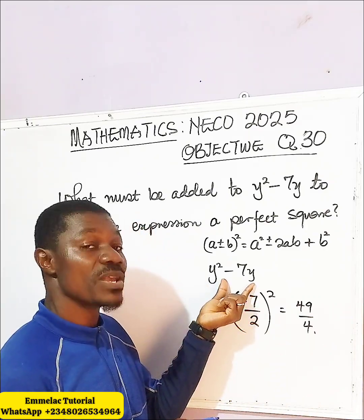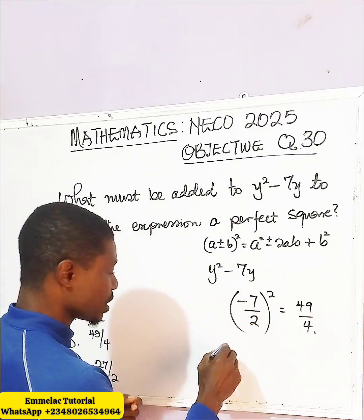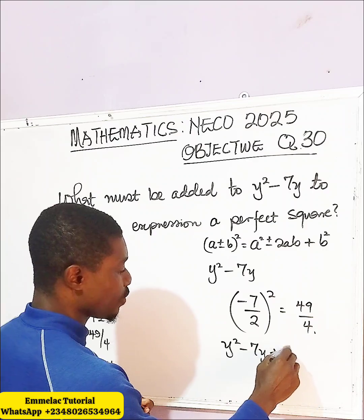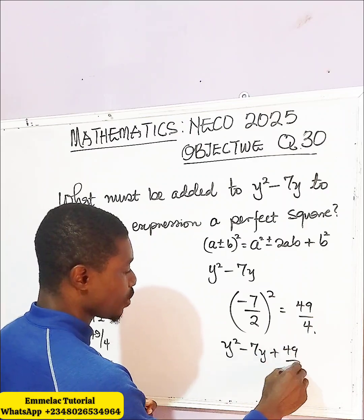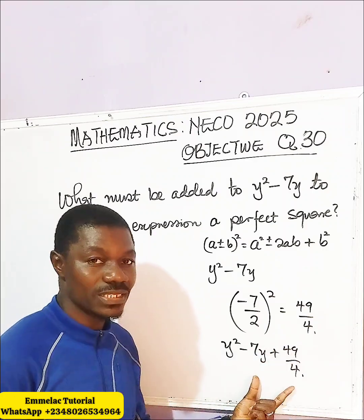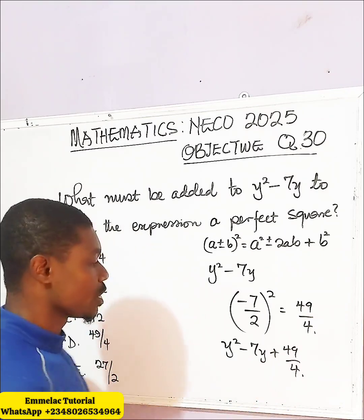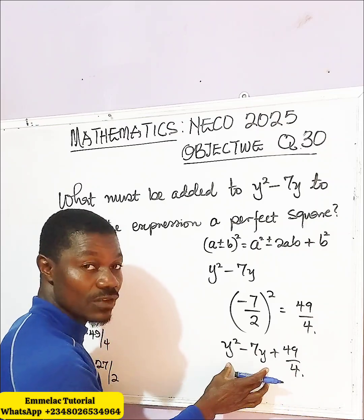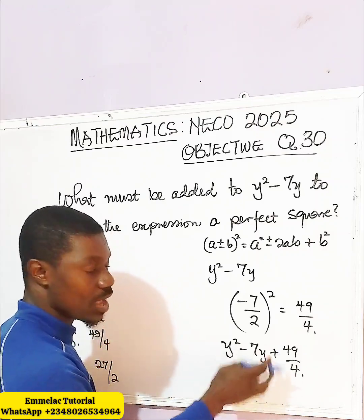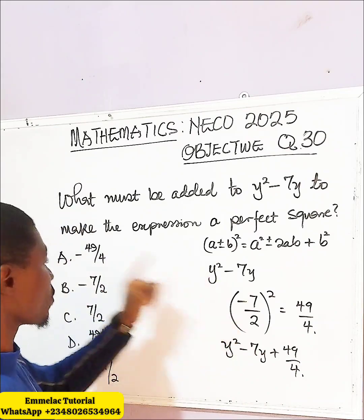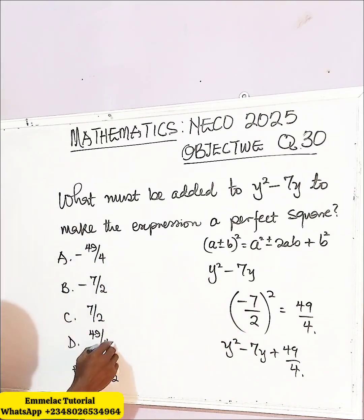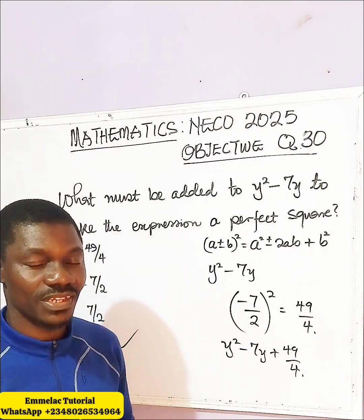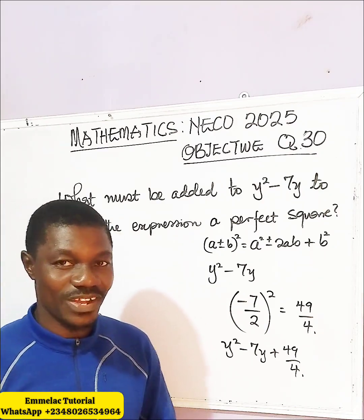It implies that plus 49 over 4, when added to y squared minus 7y, makes it a perfect square. So y squared minus 7y plus 49 over 4 is a perfect square. Therefore, 49 over 4 is the answer, and D is the right option. Thank you and God bless you.